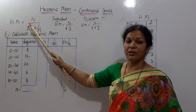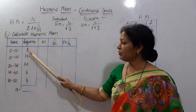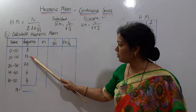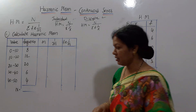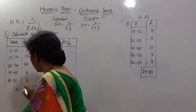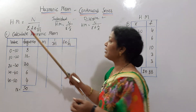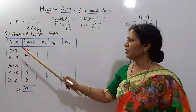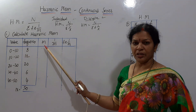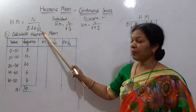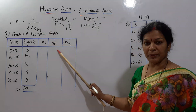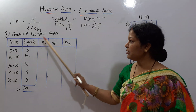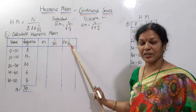What is the n value? The total frequency is 20, 40, 50 — so n equals 50. We need frequency into 1 by m. Here m is the mid value of each class interval, and then we compute 1 by m, and then frequency into 1 by m.